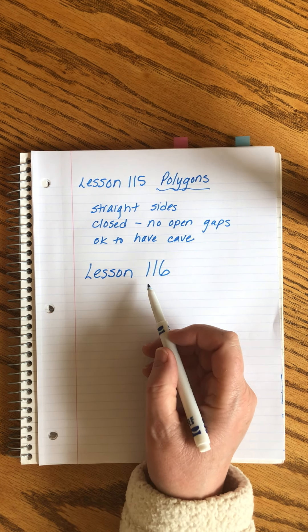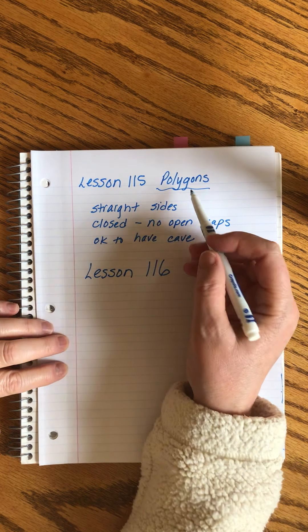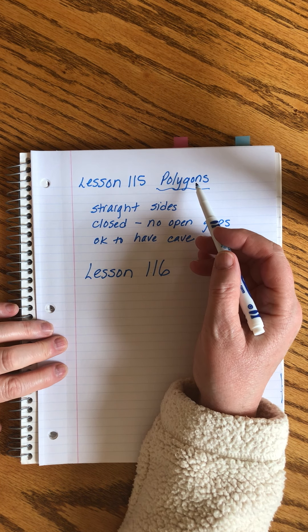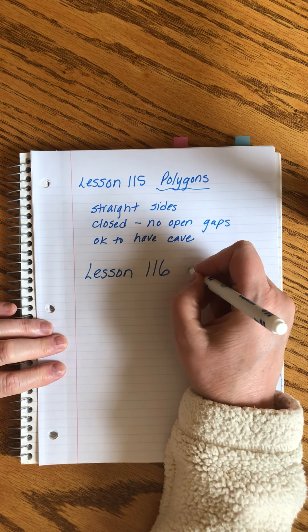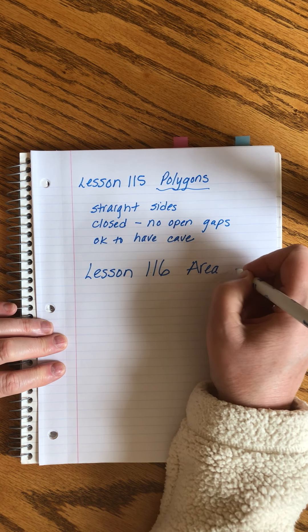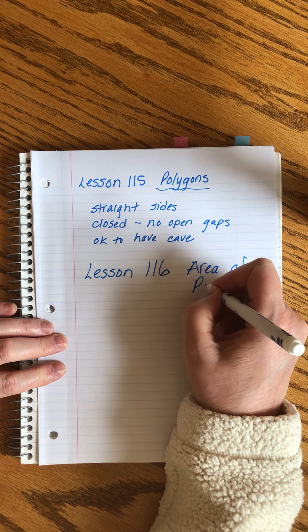Saxon Algebra 1 Half, Lesson 116. Last time we talked about polygons, it was boring, but now we're going to do something a little more interesting. We're going to find the area of polygons.